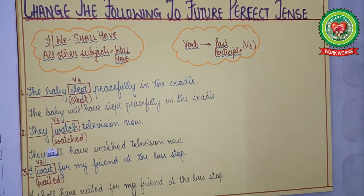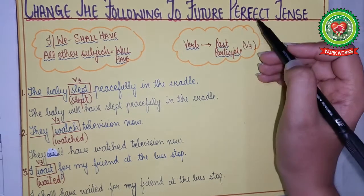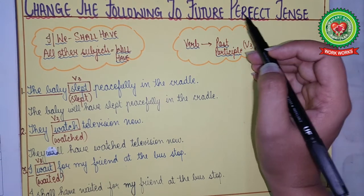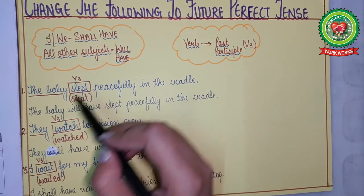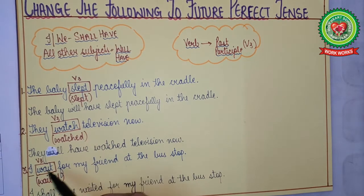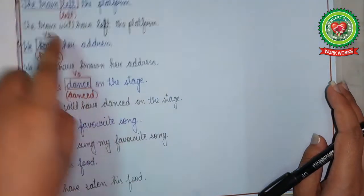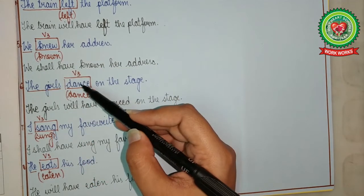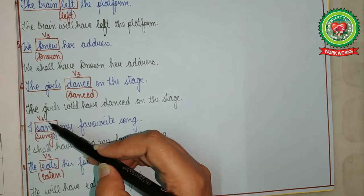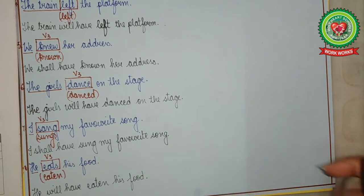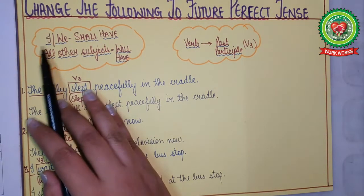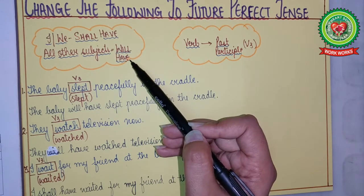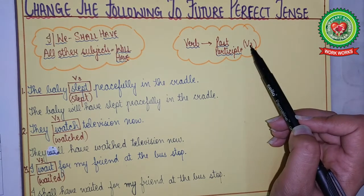Now let us see how to change sentences to future perfect tense. First, identify the action word or verb. The action words are: slept, watch, wait, left, knew, dance, sang, eats. With I and we, use shall have; with all other subjects, use will have. The verb changes to its past participle form (V3).